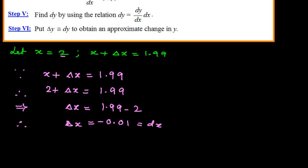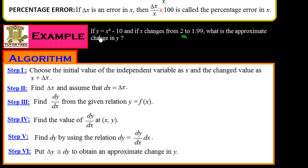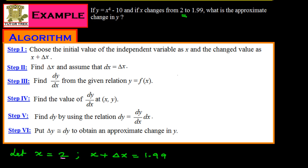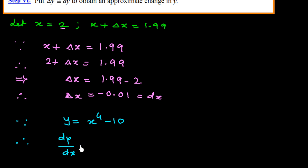Step 3: find dy/dx from the given relation y = f(x). The given function is y = x⁴ - 10. Differentiating, dy/dx = 4x³. The differentiation of the constant 10 gives 0, so we have dy/dx = 4x³.